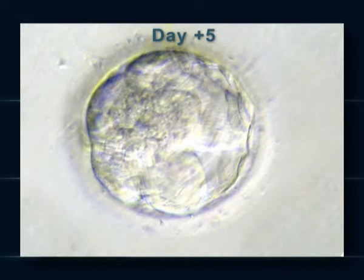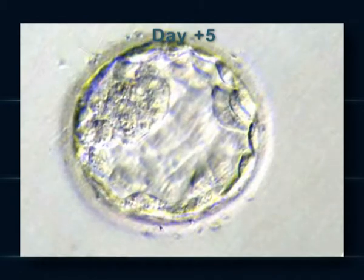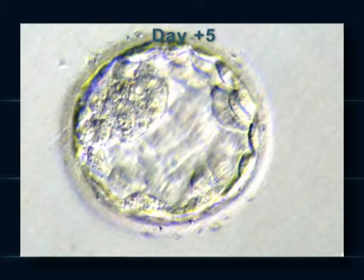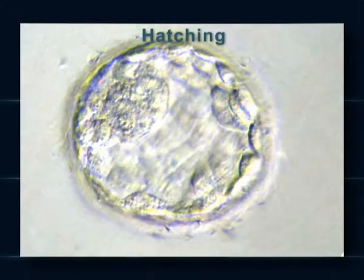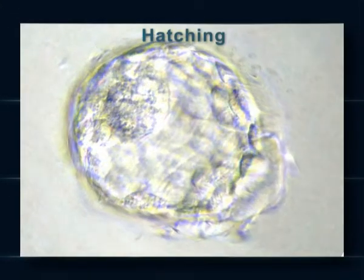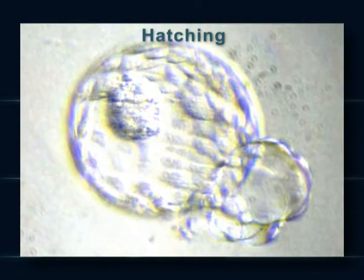On day five, the embryo contains more than 100 cells. In the center, there is a fluid-filled cavity. Finally, the blastocyst will shed the membrane that surrounds it. This is called hatching.